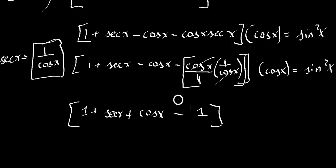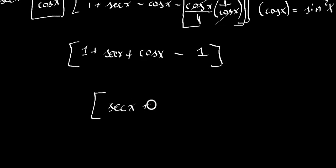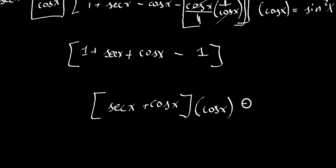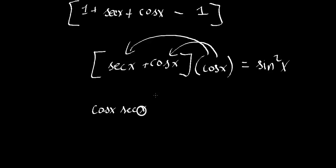We have a positive 1 and a negative 1, so 1 subtract 1 equals 0 — they cancel. We're left with secant x minus cosine x, and we are still multiplying by cosine x. If I distribute this, I get cosine x times secant x, and cosine times cosine is cosine x squared.